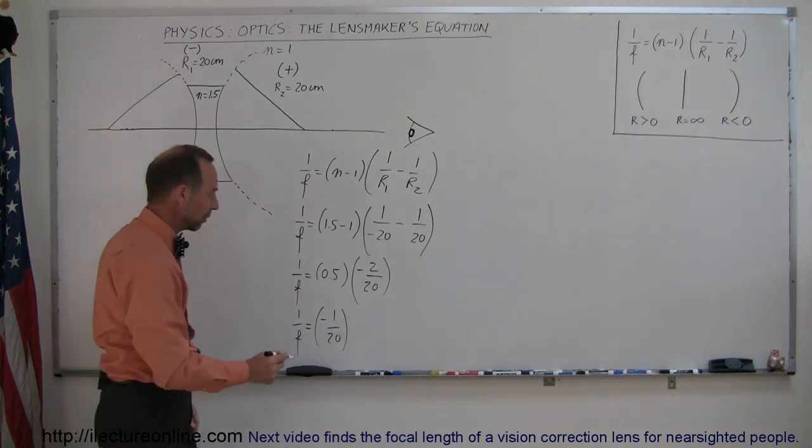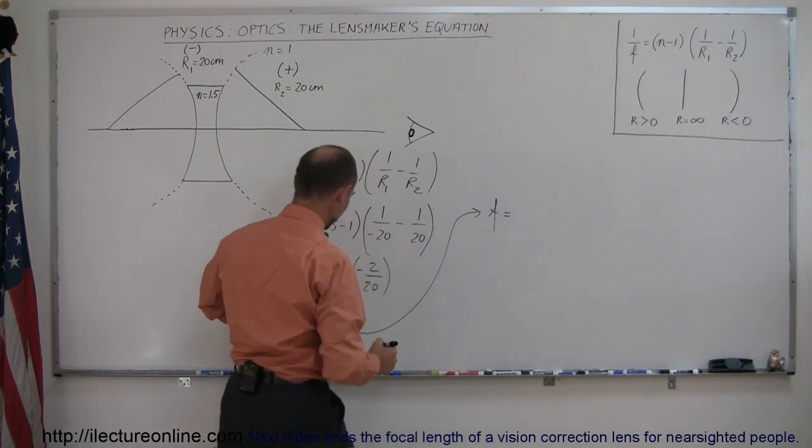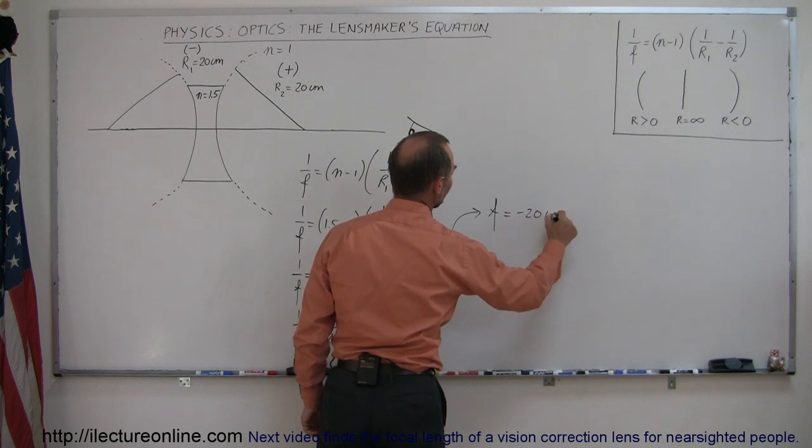And then if we flip the equation around, because we're looking for F, then F is equal to the inverse of that, which would be minus 20 centimeters.